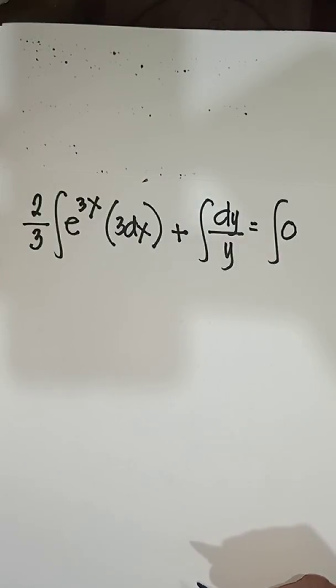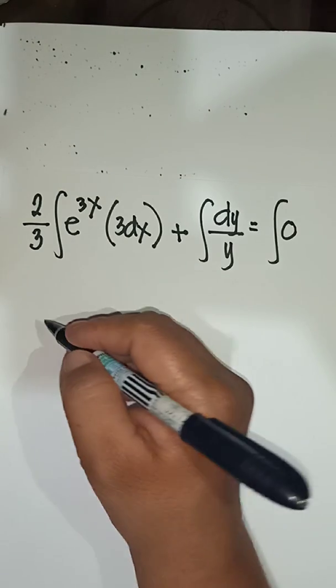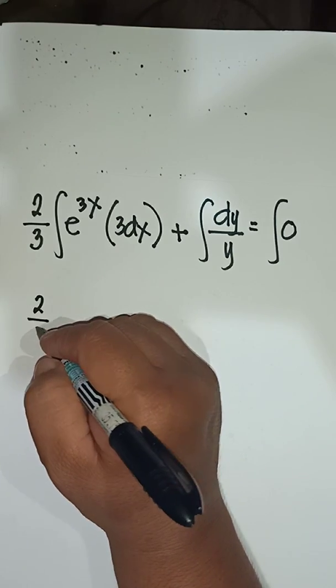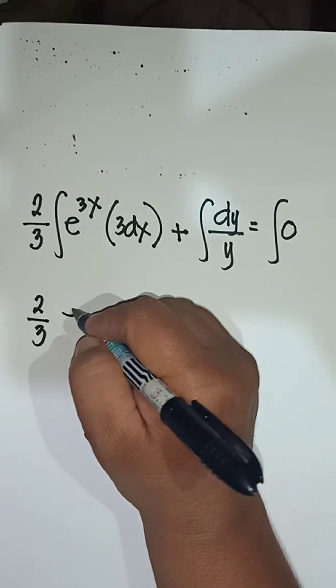The answer here would become: two-thirds, e to the u, so e^(3x),